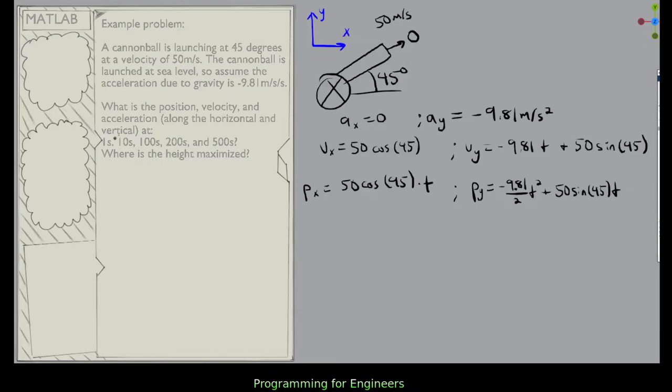So if we're trying to find the position, velocity, and acceleration at 1 second, 10 second, 100, 200, and 500, the way we can do this: 1, we can try numerics, 2, we can look graphically, 3, we can do symbolics.